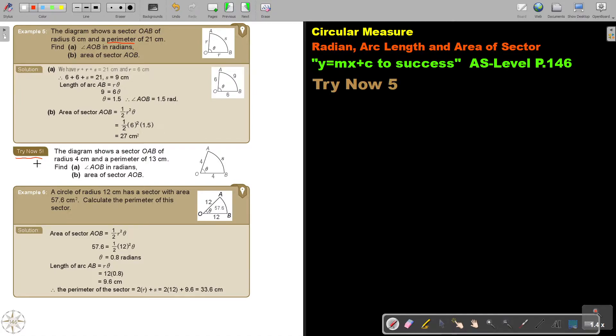The diagram shows the sector OAB of radius 4 and perimeter 13. Okay, this is very important. So the perimeter is going to be, in this case, 13. So I have to subtract that 8, and then I will find that value of S. So first, we are just going to find the arc length. We start with number A.